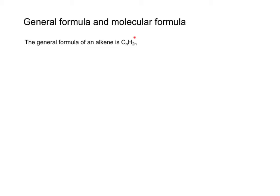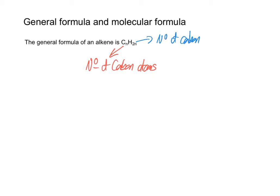The general formula of an alkene is CnH2n. The Cn part just refers to the number of carbon atoms, and then the H2n tells us that to work that out is the number of carbon atoms multiplied by two. So pretty straightforward really.